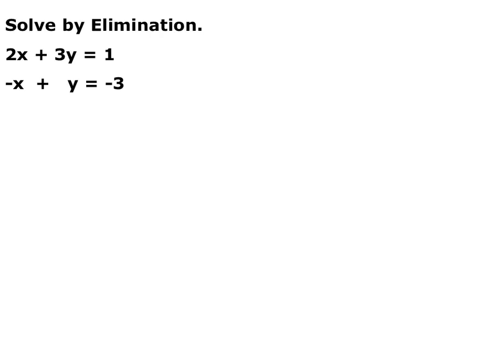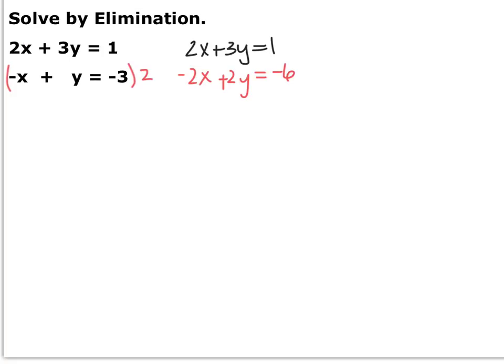For the elimination method, you want to get one variable to have opposite coefficients. You'll usually have to multiply one or both equations by something to get your coefficients to match. When I look at this, you have two options: multiply the bottom equation by negative 3 to get your y's to be opposite coefficients, or multiply both equations by 2 to get your x's to be opposite. I'm going to do that because I already have a negative x. I didn't touch the first equation; I distributed a 2 to the second equation, so you get negative 2x plus 2y is equal to negative 6.